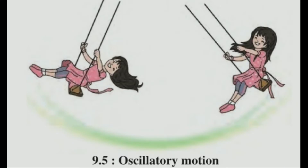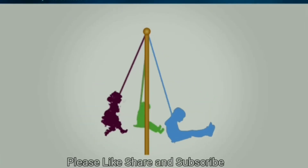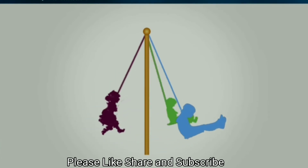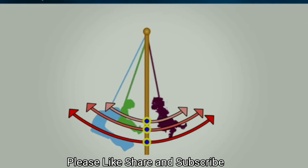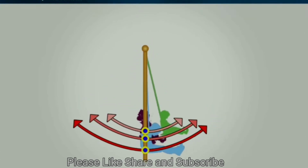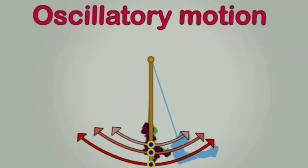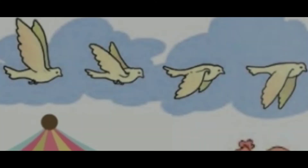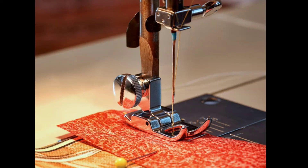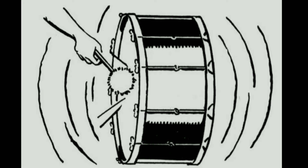3. Oscillatory Motion: A swing always comes back from one end to the other end, taking about the same time for each swing or oscillation. This movement of a swing is called oscillatory motion. Similarly, the movement of the pendulum of a clock, the wings of a bird, the needle of a sewing machine, and the vibrating diaphragm of a tabla or a drum are also examples of oscillatory motion.